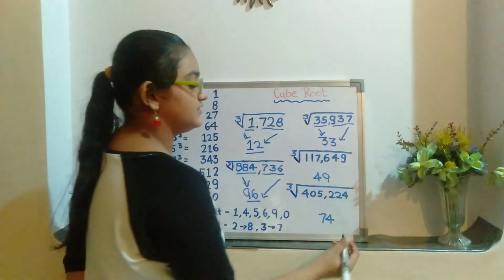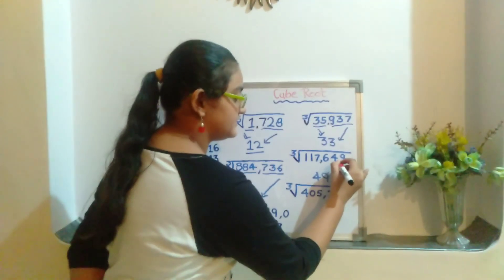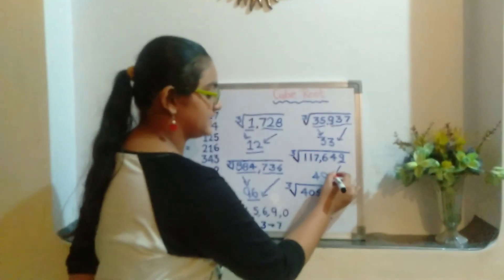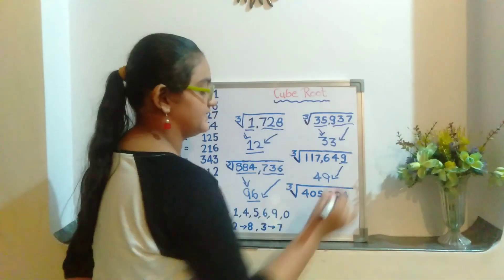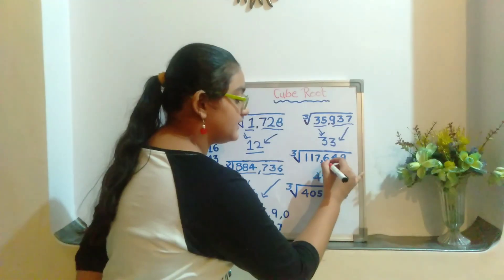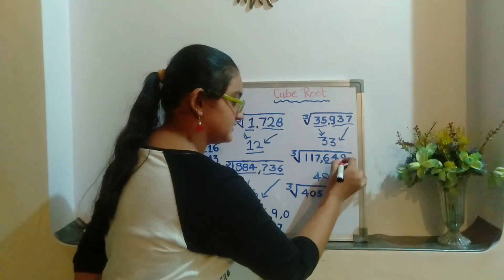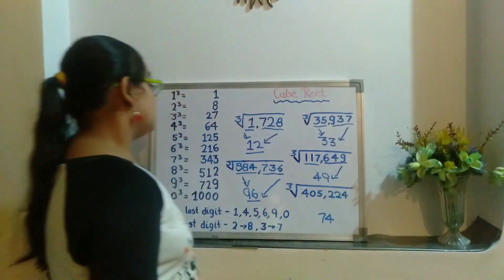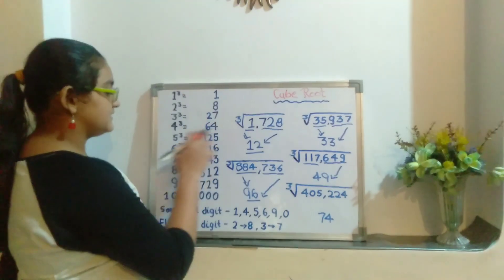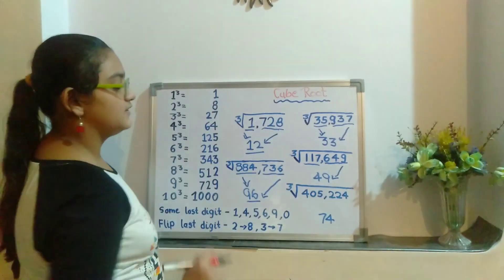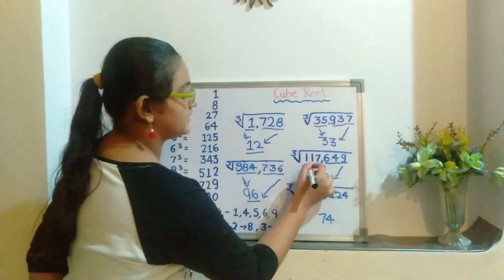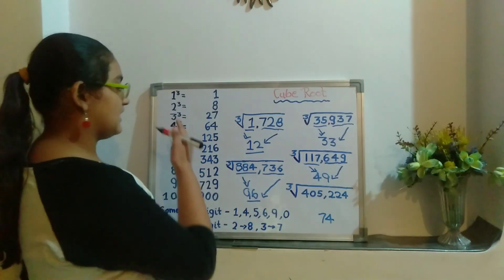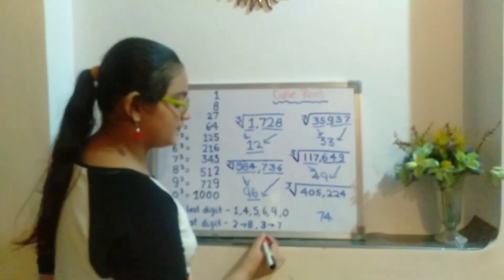Now in the next question, first we will concentrate on the last digit which is 9. As 9 is the same as 9, so we will write 9 here. We will now ignore the last 3 digits and concentrate on the leftover digit which is 117, which is greater than 64 and lesser than 125. So we will write 4 here. So we have written 49 here.